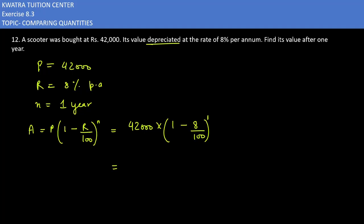Now what you can do is you can divide 8 and 100. So this will be 4 and this will be 50. So you are getting 1 minus 2 over 25. 42,000 into. Now taking LCM of the bracket value we have. So it will be 25 minus 2. 42,000 into 23 over 25.